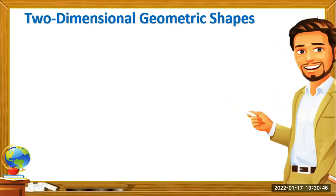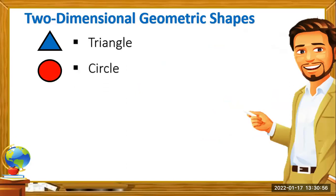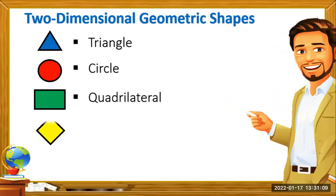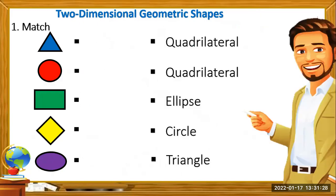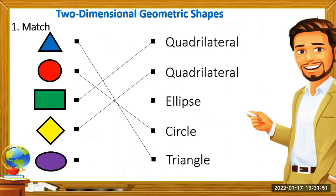Here are the two-dimensional geometric shapes. This first shape is a triangle. This next shape is a circle. Any shape that has four sides and four vertices is called a quadrilateral — it might look like a square, a diamond, or a kite shape, but it is still a quadrilateral. The last shape is called an ellipse. Make sure you know the spellings so that matching activities are easy for you.